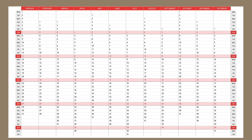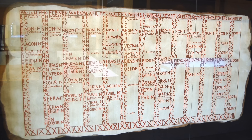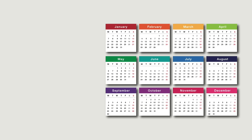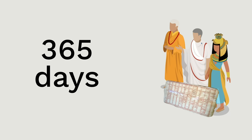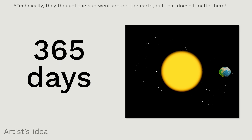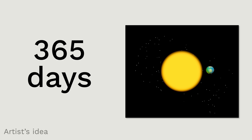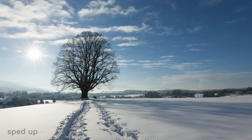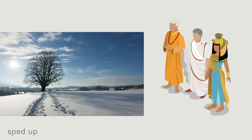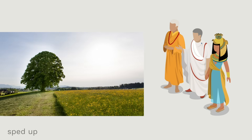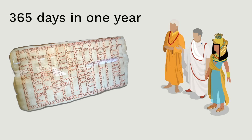First, you have to know something about our calendar. This calendar that we use today was invented by people a long time ago. You might know that our one-year calendar contains 365 days. That's not just some random number that these ancient calendar inventors made up — they chose that number on purpose, because it's the number of days it takes for the Earth to go around the sun. Another way of looking at that: 365 days is the number of days it takes for the Earth to go through all four seasons: winter, spring, summer, fall. These inventors of the calendar wanted the calendar to match what the Earth is actually doing, and 365 is the number of days in a year.